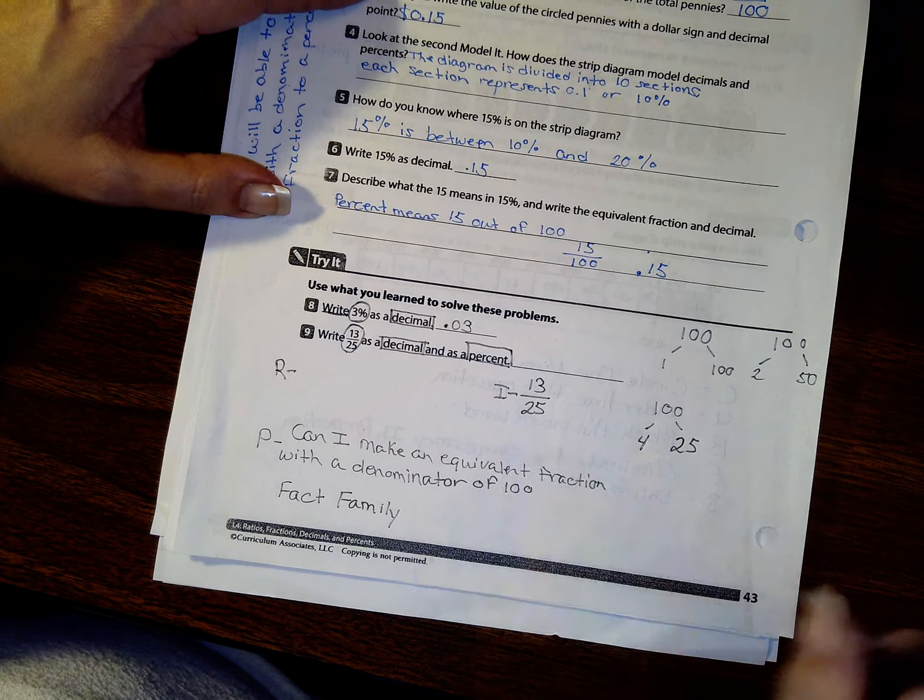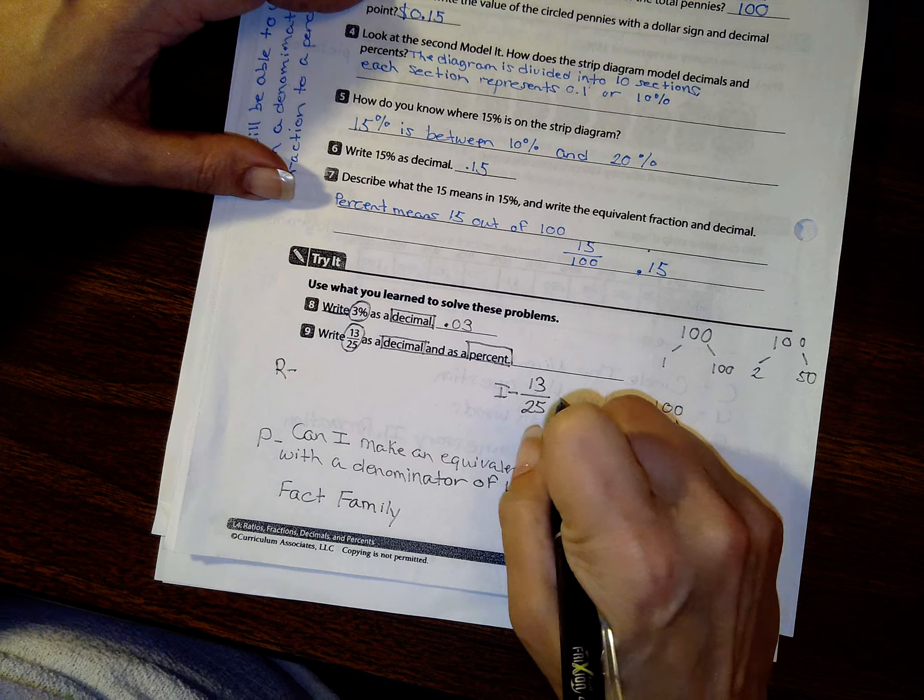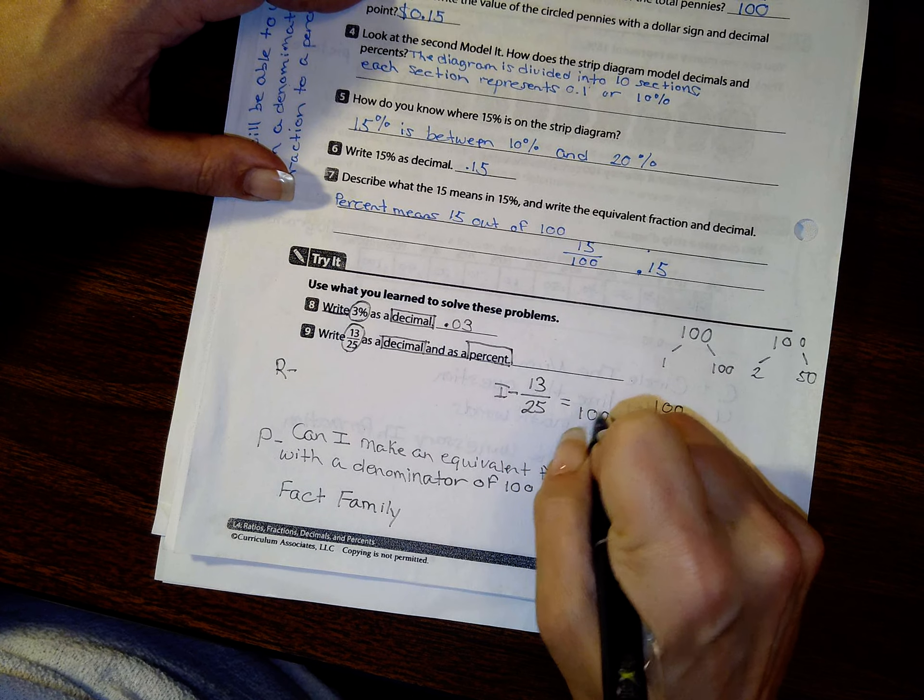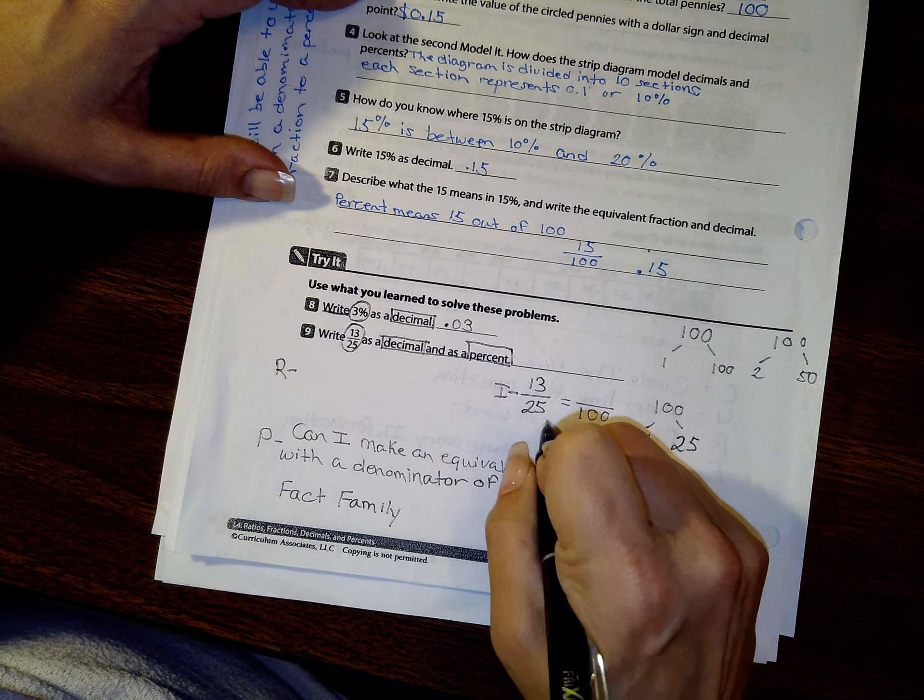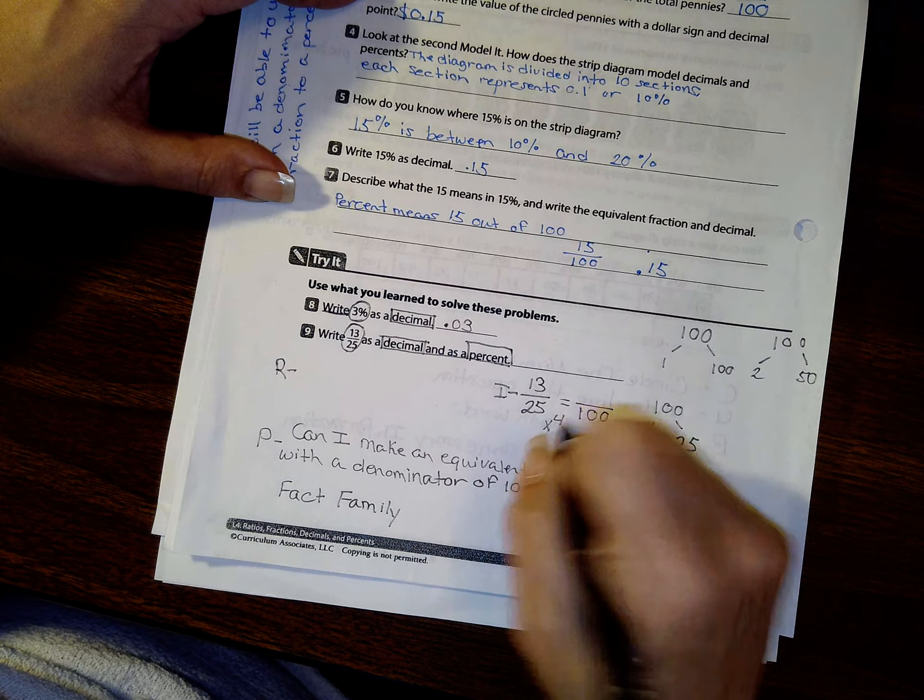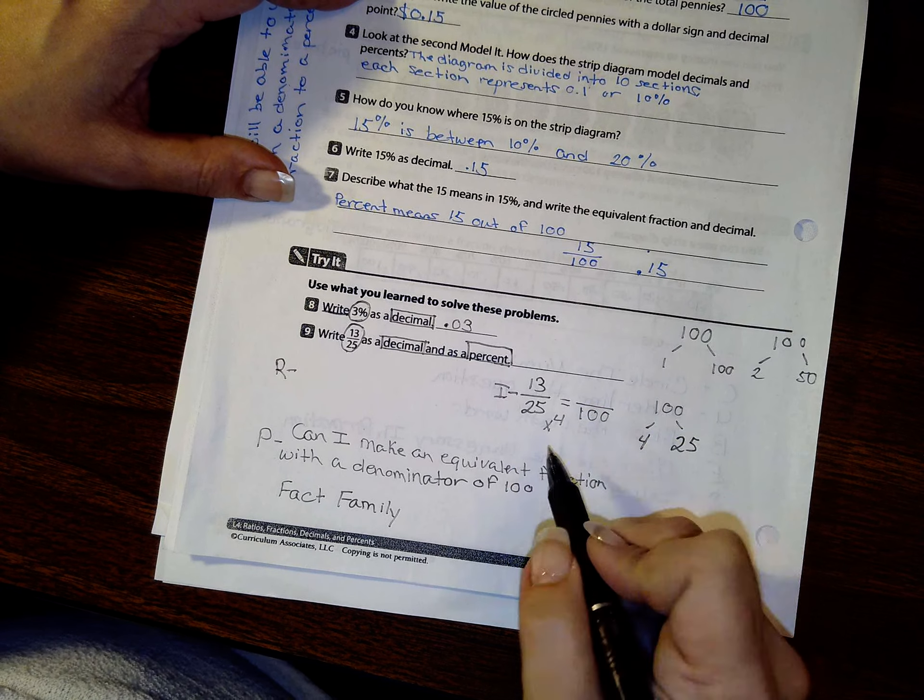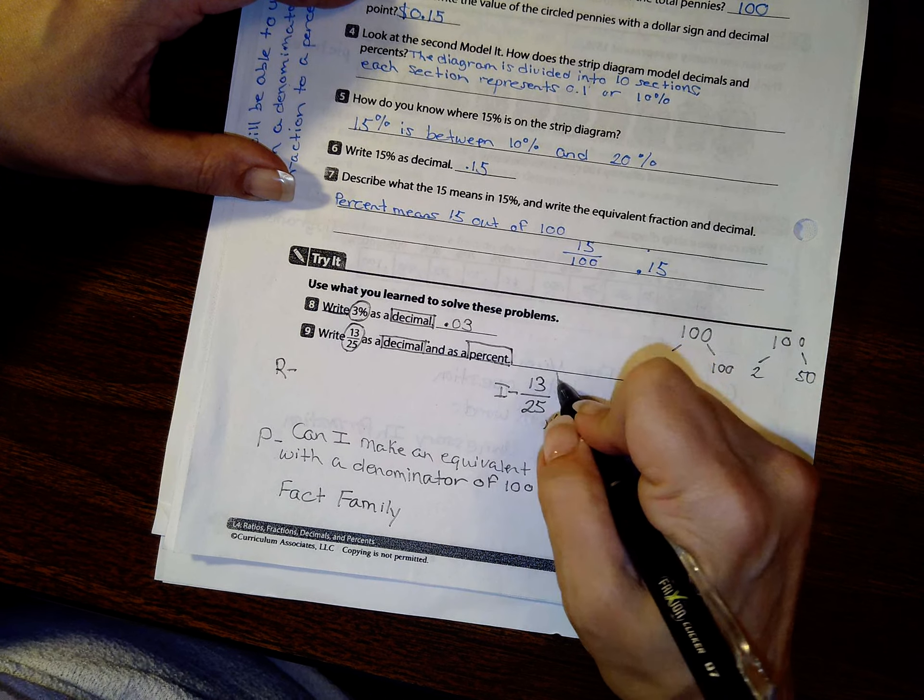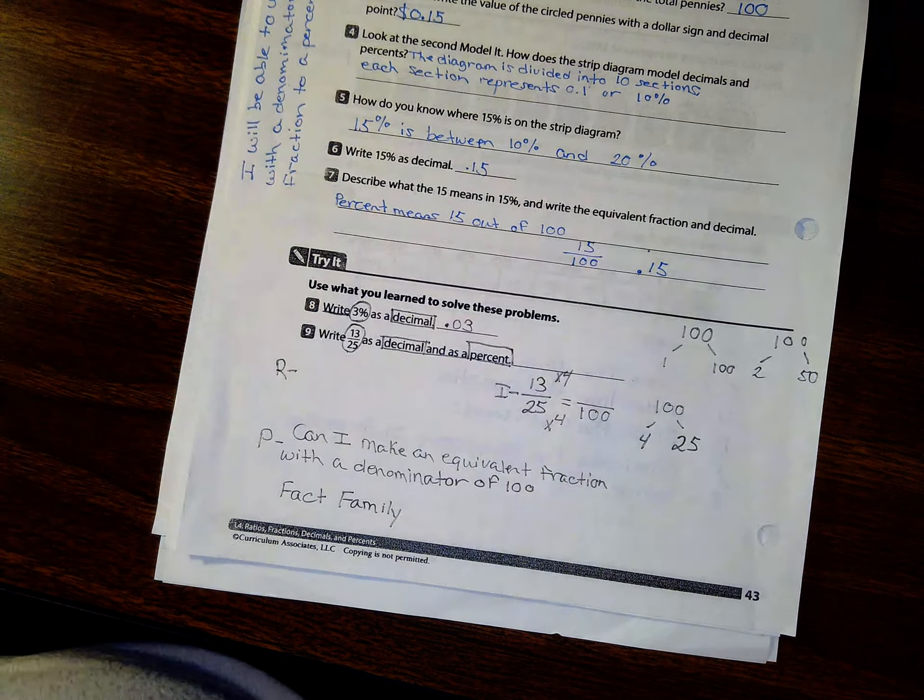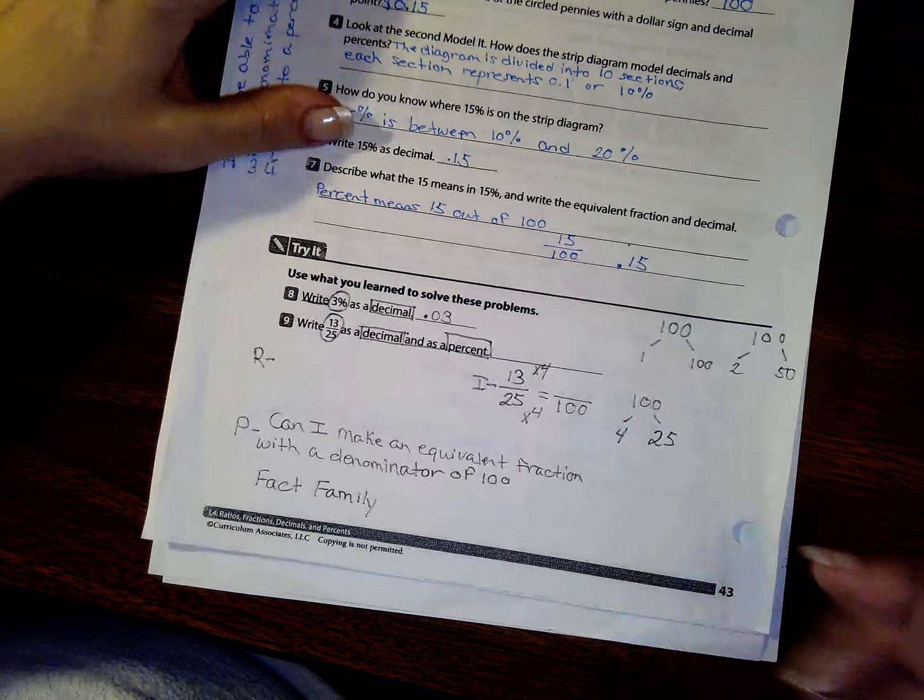So I'm going to come over here. And I know I need to have a denominator of 100. And if I do 25 times 4, I can do that. What I do in the denominator, I do in the numerator. So I'm going to do 13 times 4.